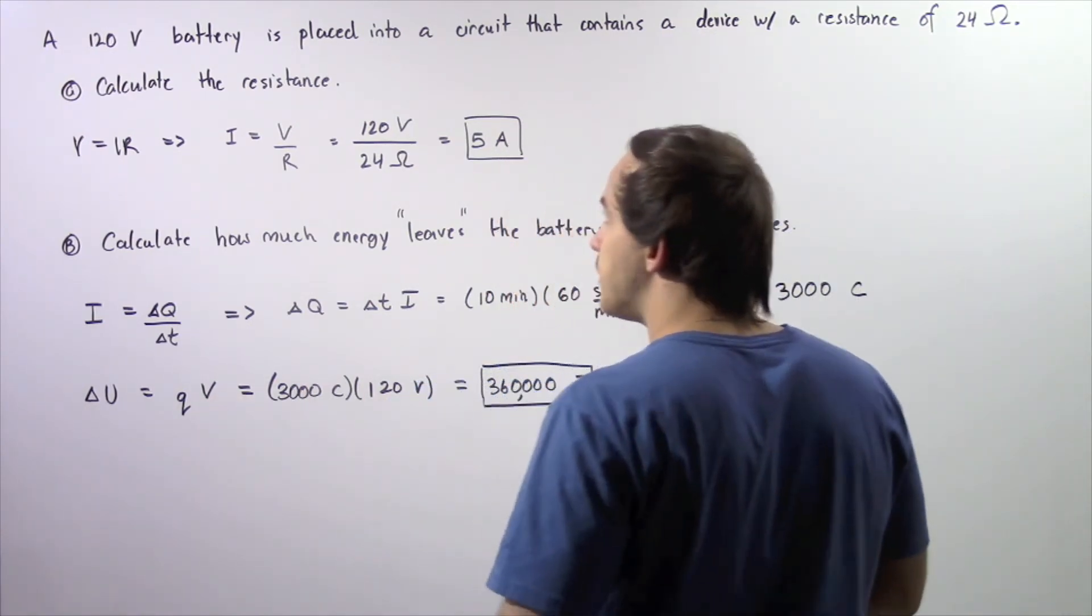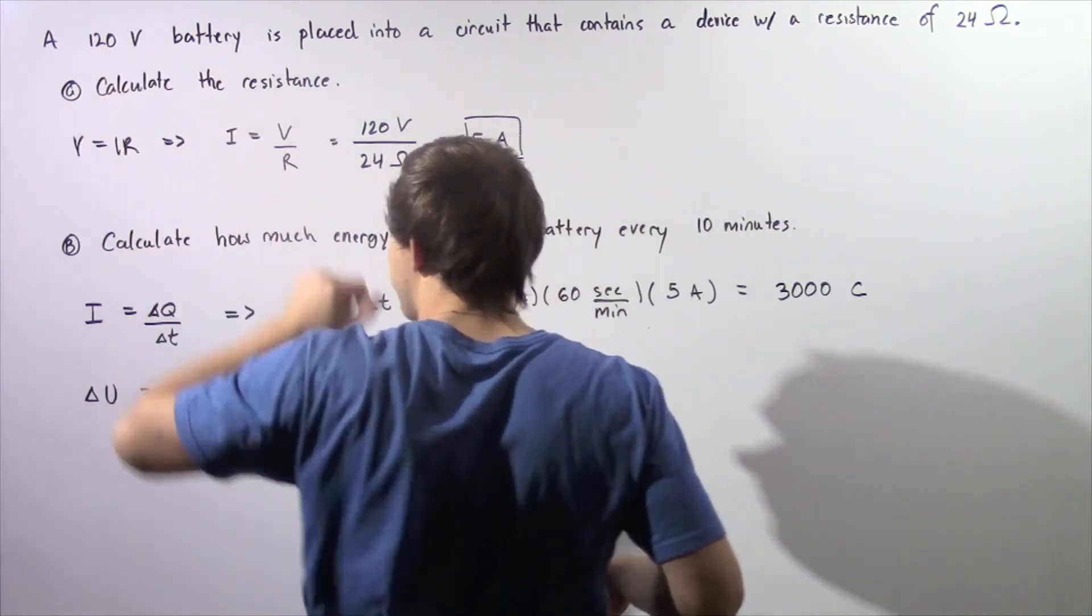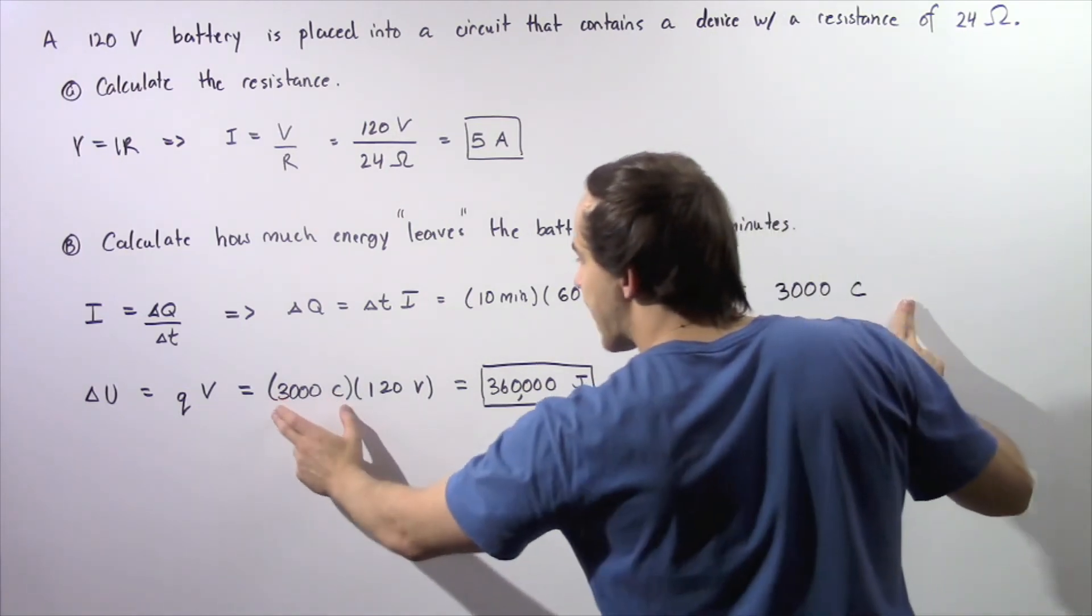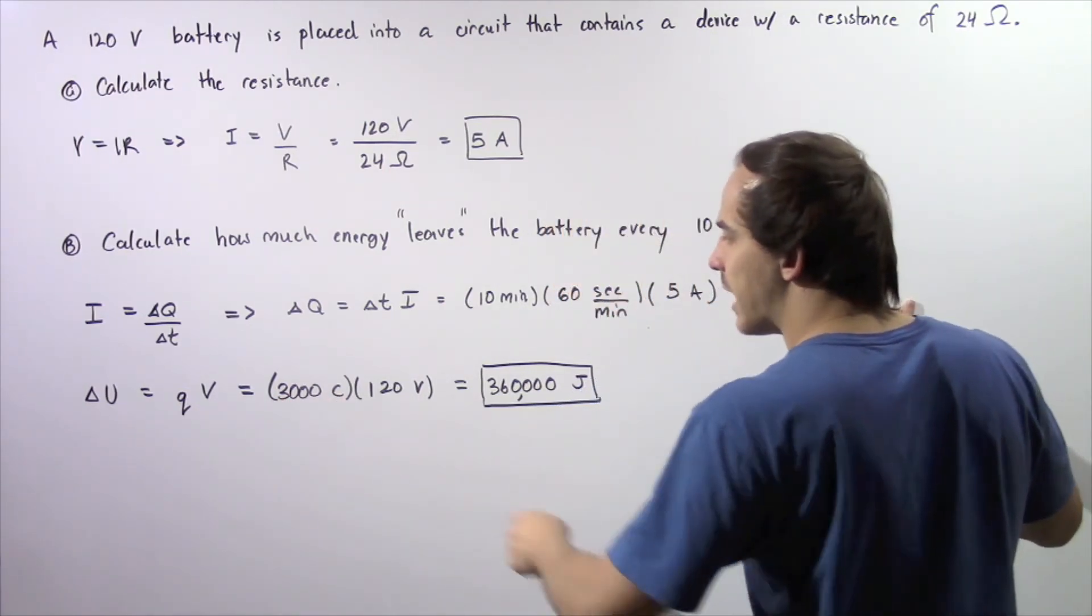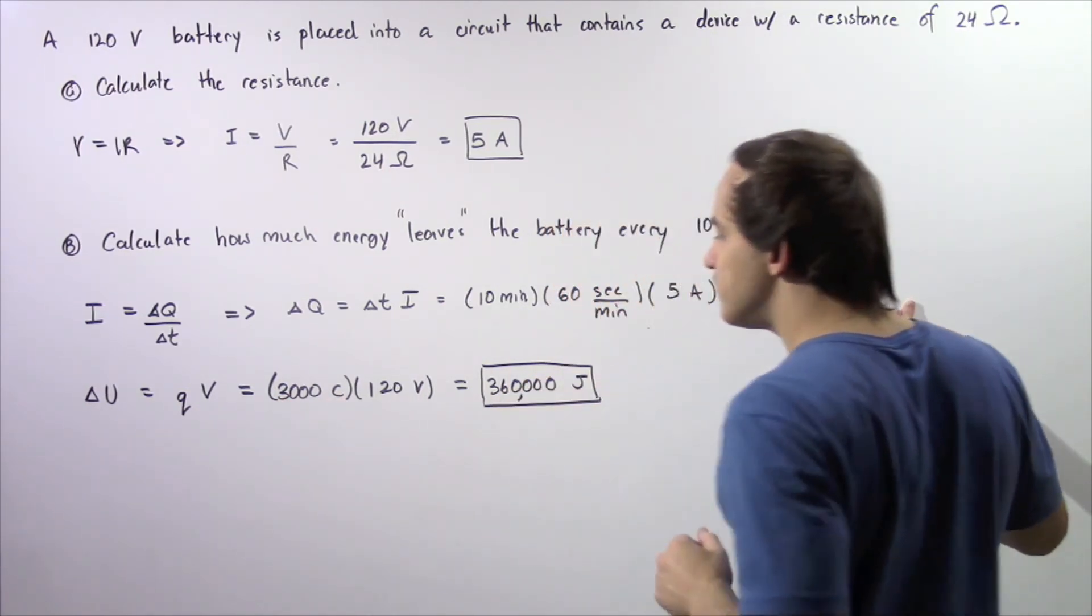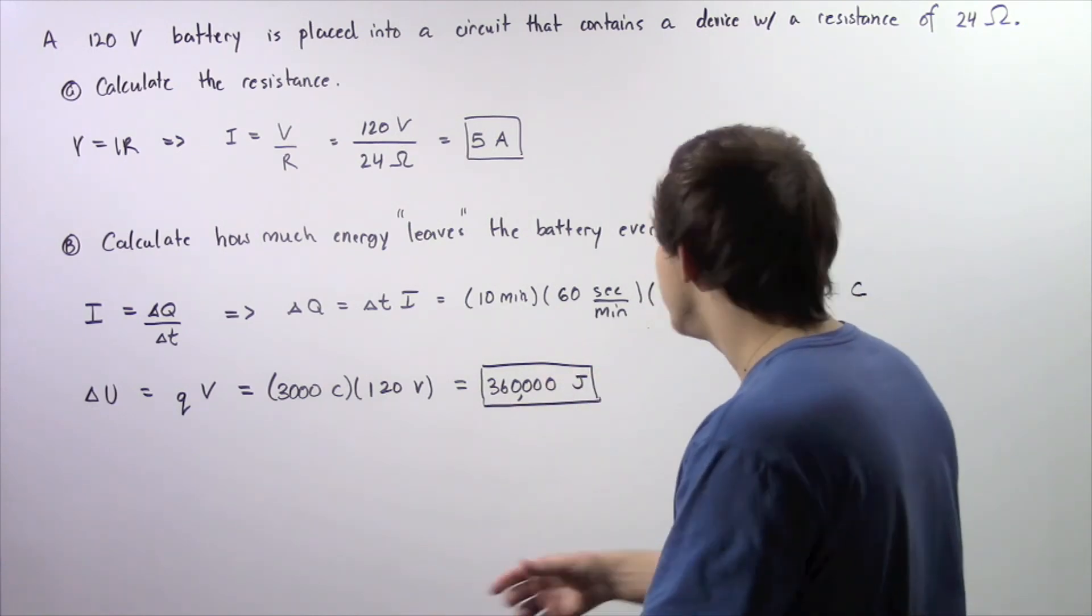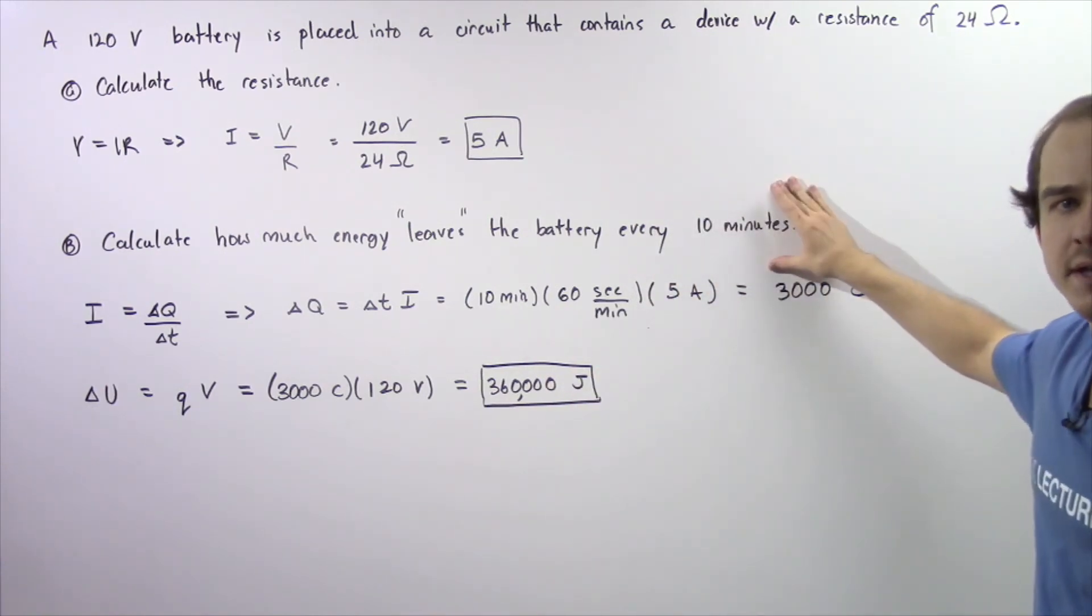The voltage difference is given to be 120 volts. The Q was calculated in this step. So 3000 coulombs multiplied by 120 volts gives us 360,000 joules of energy is required by the battery every single 10 minutes.